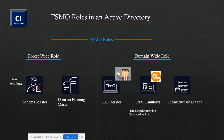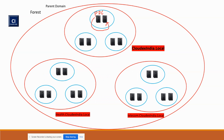Next is password update. Whenever there is any update related to the password — for example, a user is logged in and connected with a particular domain controller — when the user makes any changes, the password will be updated through the PDC emulator. This domain controller will update the password there. This is very frequent and happens quickly, so your password changes will be applied fast.